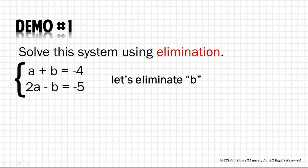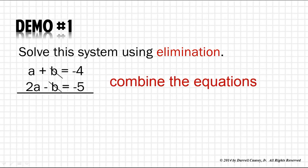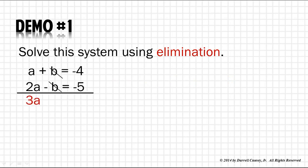Why did I choose b? When I look at the two variables, a and b, b is already a positive and negative, and they have the same coefficient. A positive 1b and a negative 1b equals zero. They automatically cancel out. We do that just by adding them together, combining the two equations. Then a plus 2a is 3a, and negative 4 and negative 5 is negative 9.